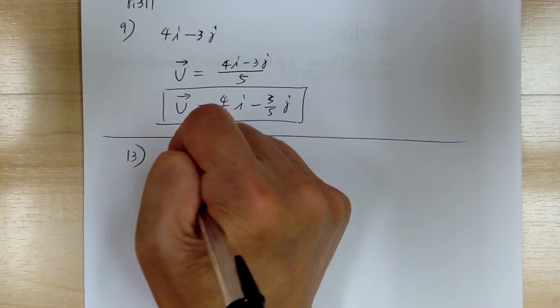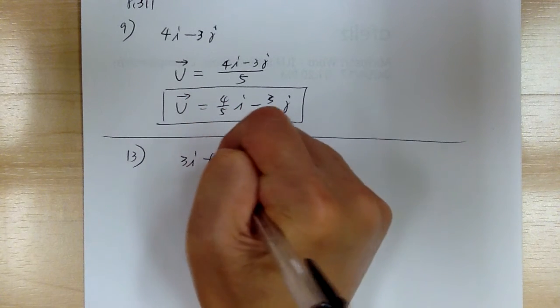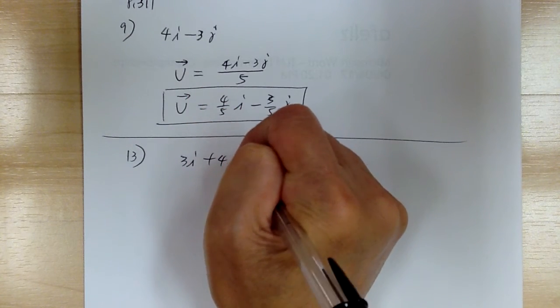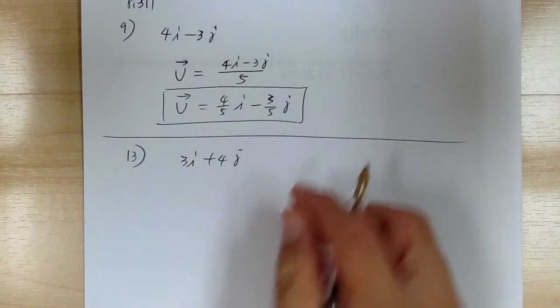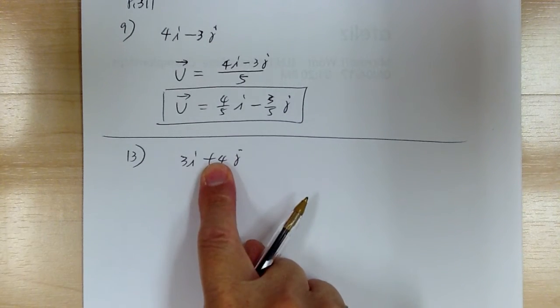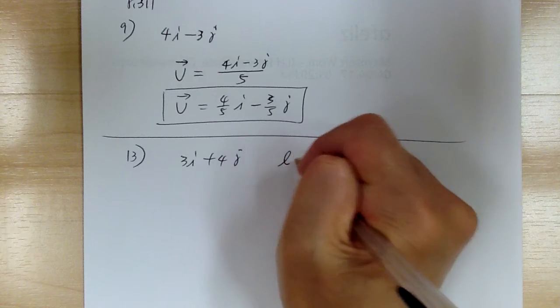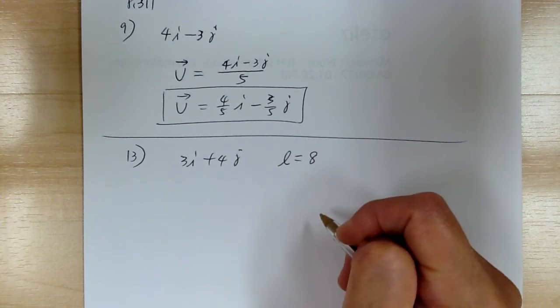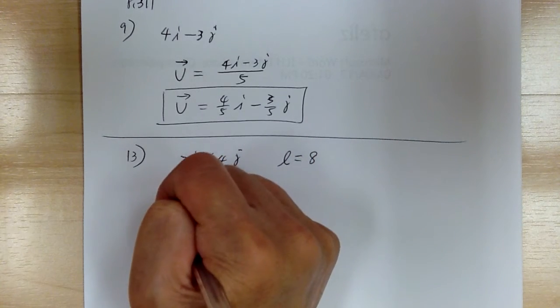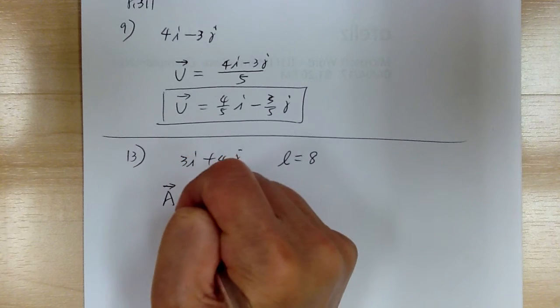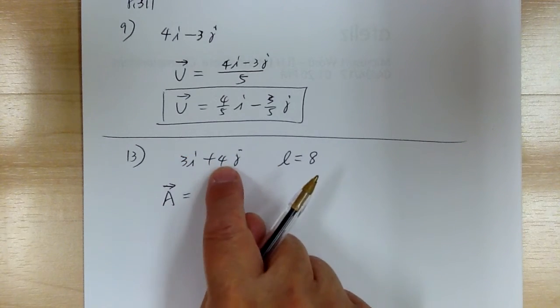Number 13, you have a given vector that's 3i plus 4j, and you're looking for a vector that has the same direction as that and has a length of 8. So let's call this vector A, so you're looking for vector A. You have that direction.